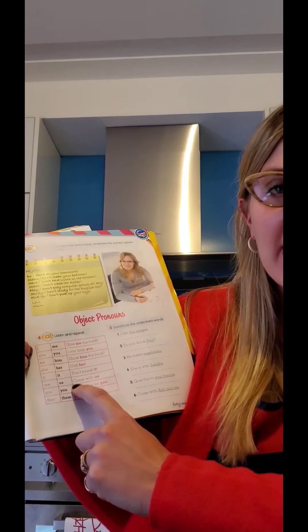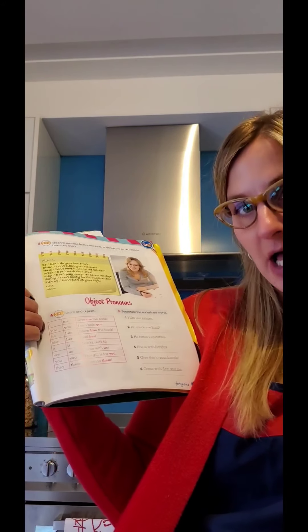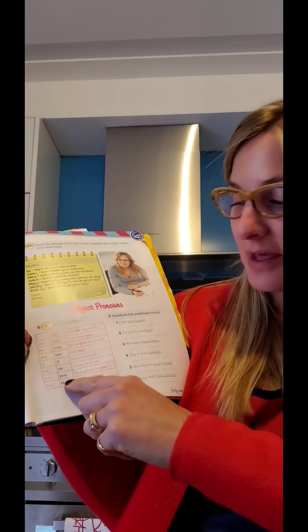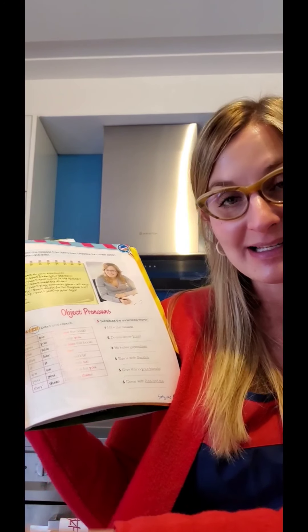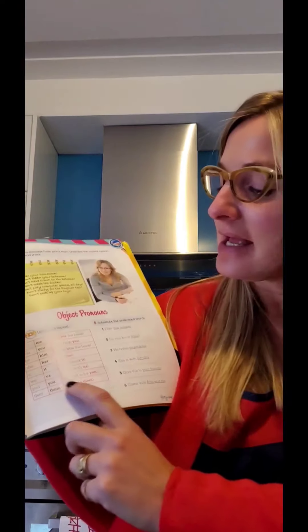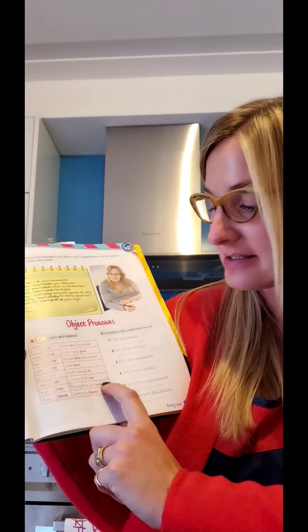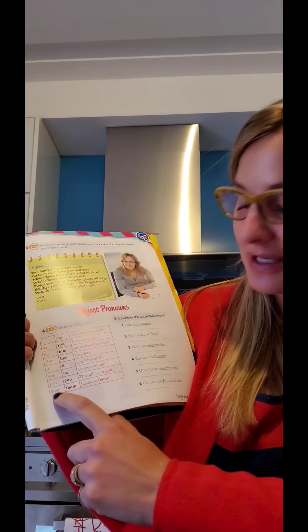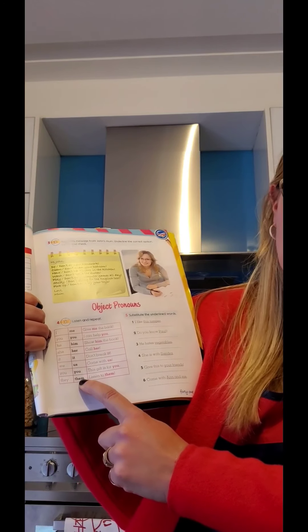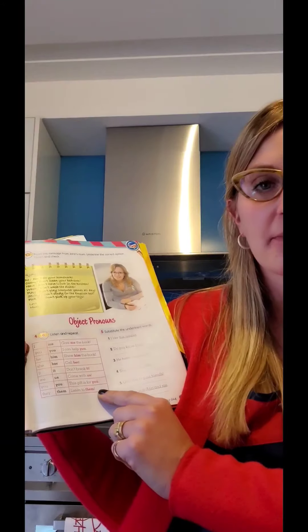You plural queda igual — this gift is for you — este regalo es para ustedes, porque estábamos hablando de you plural. And they — que significa a ellos o ellas — el pronombre objetivo es them. Listen to them — escuchen a ellos o a ellas. Por ejemplo, están en un oral y la profe dice: silence and listen to them. You have to listen to the audio — listen and repeat.